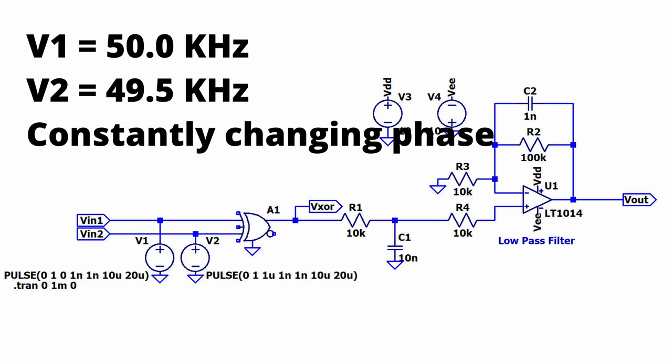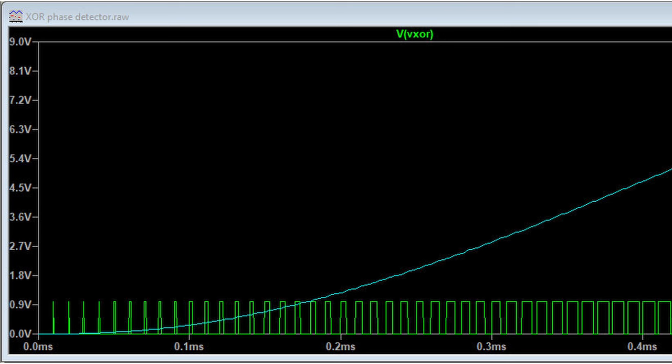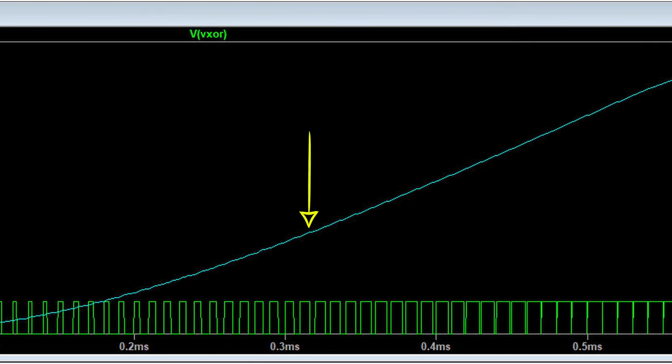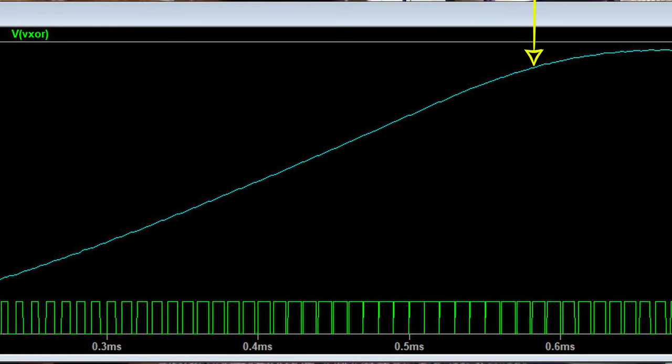Lastly, I am going to take the same circuit and change the second input to a slightly different frequency but with no initial delay. What this means is that the phase variance will be ever increasing as time goes on because they are two different frequencies. Looking at the output of the exclusive or gate, we can see pulses of ever increasing width. The output of our phase detector shows a nice ramp as expected because the phase difference is ever increasing with each successive cycle of our input signals.